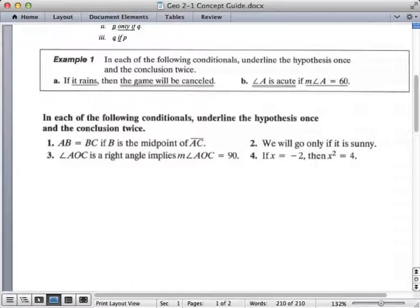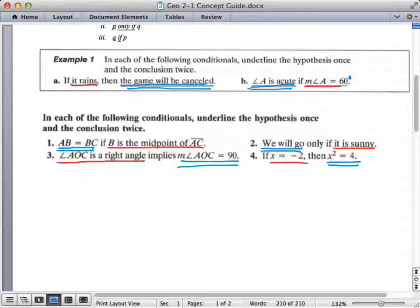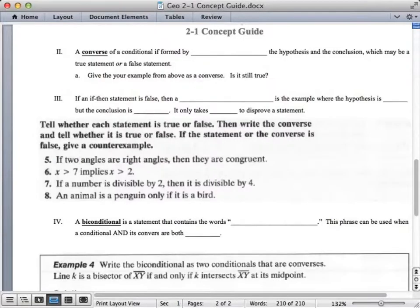See if you can identify the hypothesis and conclusion. Like in this example, if it rains, then the game will be canceled. Well, the hypothesis is it rains, and the conclusion is the game will be canceled. In this other example, it says angle A is acute if measure angle A is equal to 60 degrees. The hypothesis is the measure angle A equals 60 degrees. This is the conclusion if hypothesis version of it. And then angle A is acute is the conclusion. So, go ahead, I bet you can do this already. See if you can identify the hypothesis and conclusion on these four right here. You can do the single underline and then double underline like they did. How'd you do? Good, good. I hope so. If you have any questions, mark them.